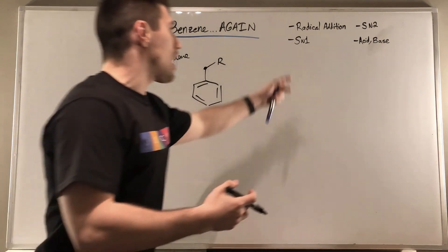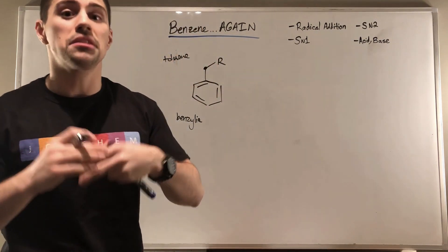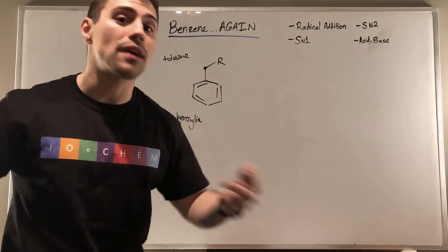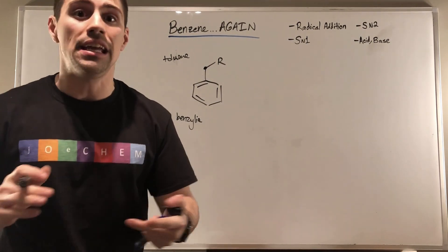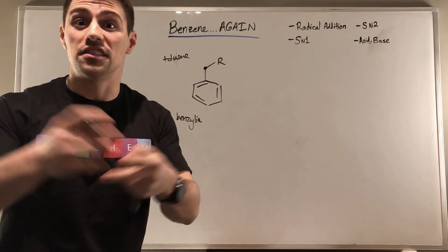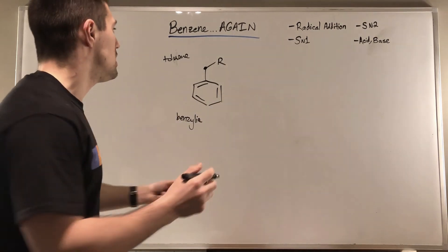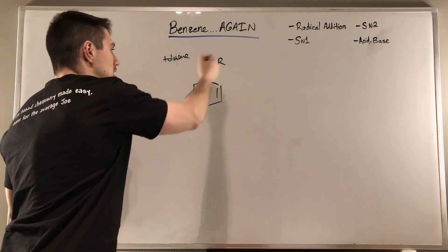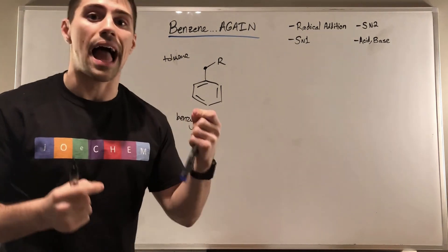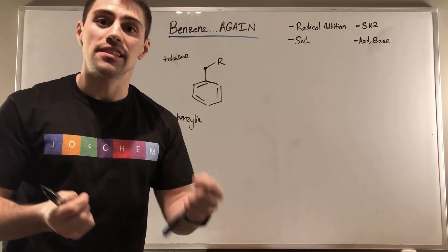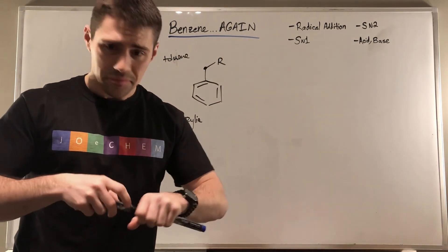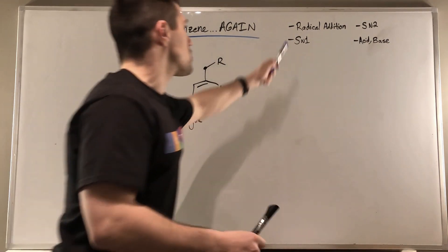But for SN1, we need something to be more substituted because carbocation formation is a thing. And you're right in thinking and saying all of those things, but the beauty of the benzylic position is the fact that there's so much resonance available next door with that cyclic conjugated system, the aromatic system.